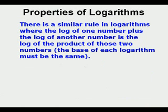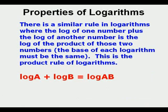There's a similar rule in logarithms where the log of one number plus the log of another number is the log of the product of those two numbers. The base of each logarithm must be the same. This is called the product rule of logarithms: log a plus log b equals log ab.